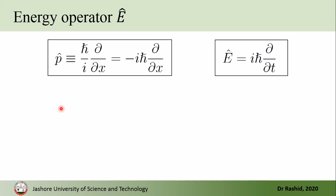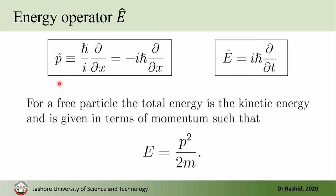We have so far identified two operators, p̂ and Ê. But we know that energy is related to momentum. Especially for the free particle, the total energy is the kinetic energy, and E = p²/2m. Remember this is the kinetic energy; since the particle is free it has no potential, so the total energy equals the kinetic energy.